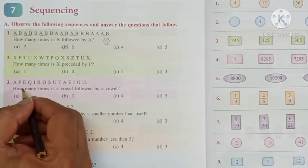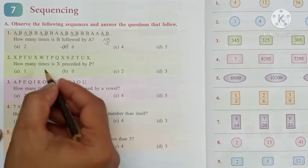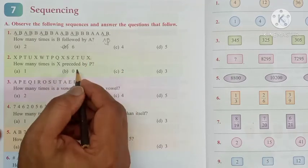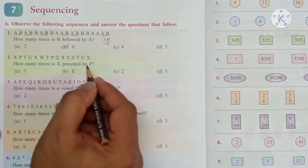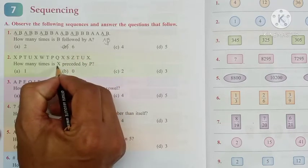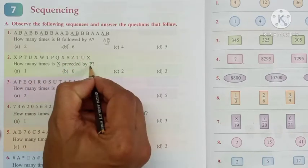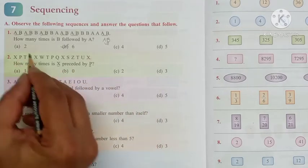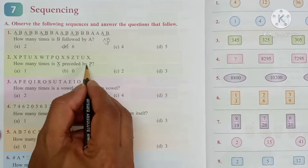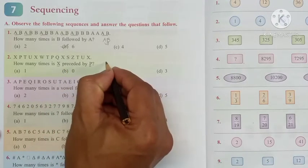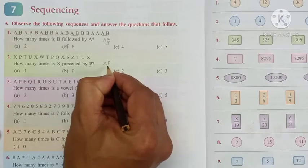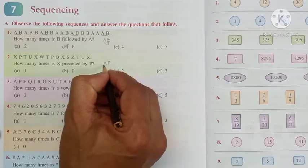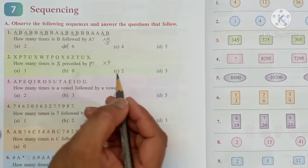Now the second question children. How many times is X preceded by P. Preceded and followed both are same. Preceded by means - but the given alphabets are to be taken very carefully in order to get the answer. X is preceded by P. We have to check the combinations like this. So please be careful.